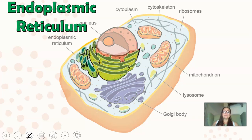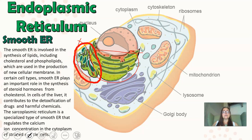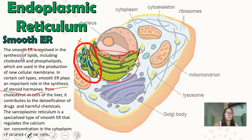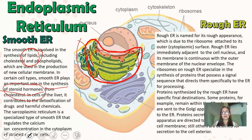The smooth ER is where lipid synthesis occurs. It's also where the body detoxifies — toxins are broken down in the smooth ER — and where steroid hormones are synthesized, since steroid hormones are made from cholesterol, which is a lipid. The rough ER, by contrast, is the site of protein synthesis for membrane-bound ribosomes.